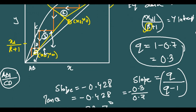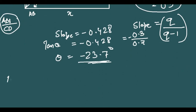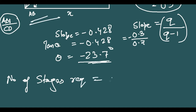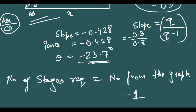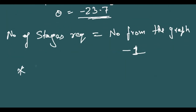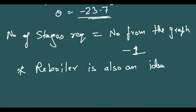Since the fourth stage crosses past XW XW, we draw a vertical line from XW XW and take the ratio of the two lengths — AB to CD — to find the fraction of the fourth plate required. The number of stages required equals the number found from the graph minus one, because the reboiler is also counted as an ideal stage.